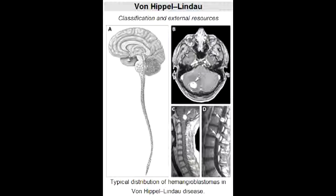What is angiomatosis? Angiomatosis is a non-neoplastic condition in which there are little knots of capillaries in various organs.